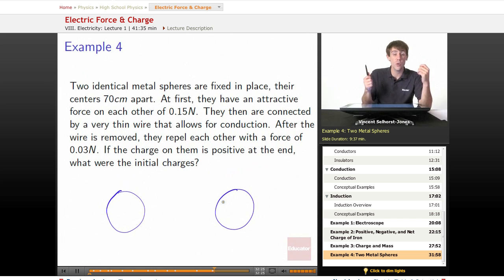They've got to be opposite. We know q1 and q2 have to be opposite. One might be positive, one might be negative, or it might be negative and then positive, but we do know that they're not the same type. They are then connected by a very thin wire which will allow for conduction.